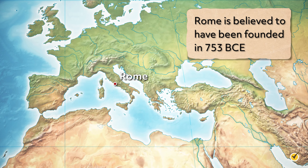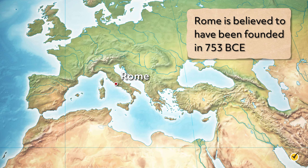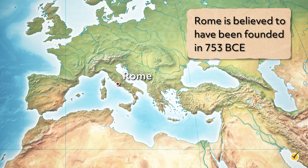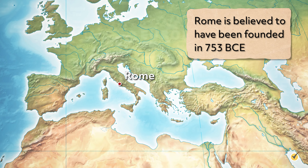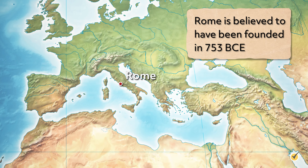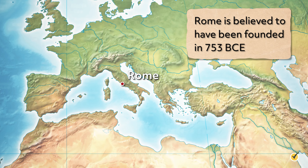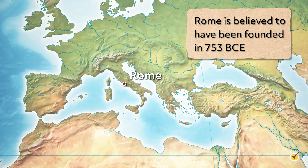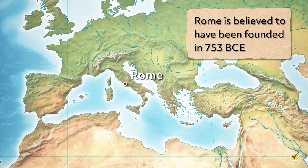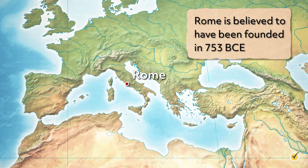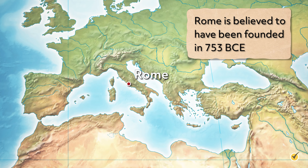Rome is believed to have been founded in 753 BCE through a merging of the descendants of those who had fled the carnage of the Trojan War and another group in the area known as the Latins, with the Latin language being adopted as the language of the city. From that point on, Rome came under the rule of seven kings, the first of which was Romulus, at least according to mythology.